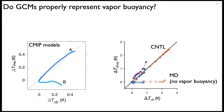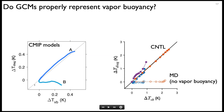Today we've introduced a clear-sky feedback due to horizontal temperature differences caused by vapor buoyancy, with a pretty significant magnitude. But do GCMs properly represent vapor buoyancy and this feedback? We're investigating that. On the right is a ΔT versus ΔT plot — with vapor buoyancy we expect all data points aligned close to the one-to-one line; without vapor buoyancy we expect a horizontal line. On the left, I show diagnostics from CMIP models. Model A has all data close to the one-to-one line, but Model B is rather flat. One hypothesis is that Model B doesn't represent vapor buoyancy properly, though we're exploring other hypotheses. I'll stop here and take questions.